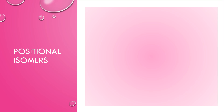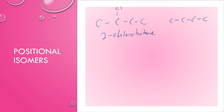You can also have positional isomers for certain functional groups. For a halogenoalkane, if the chlorine is in the second position, this would be 2-chlorobutane. Or you could have the chlorine in an end position, giving 1-chlorobutane, but it would still have the same molecular formula.